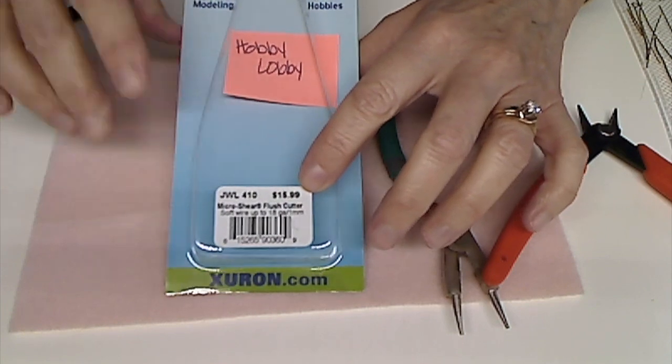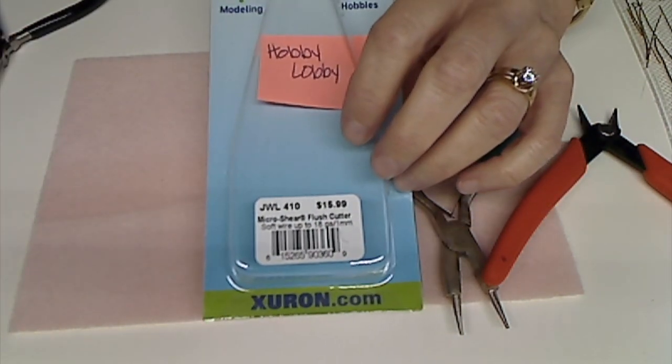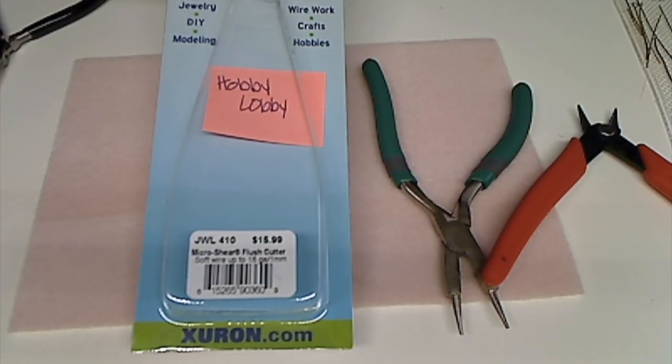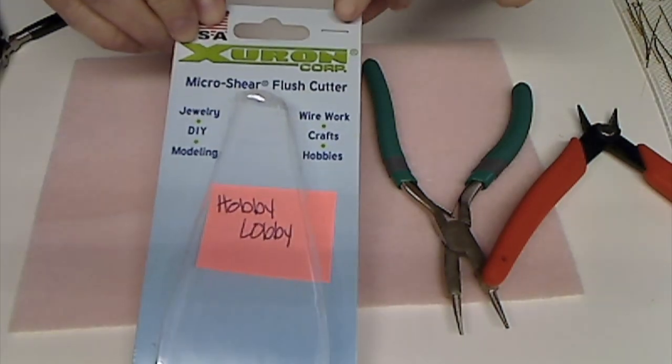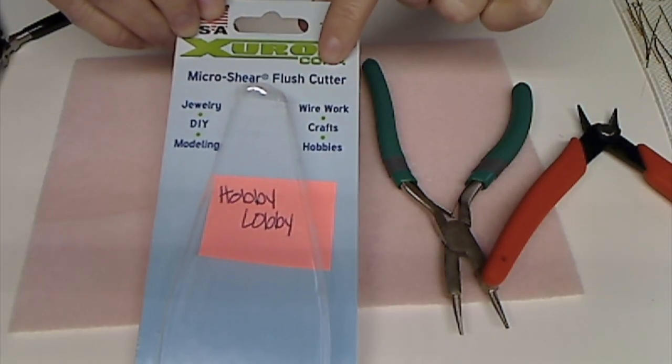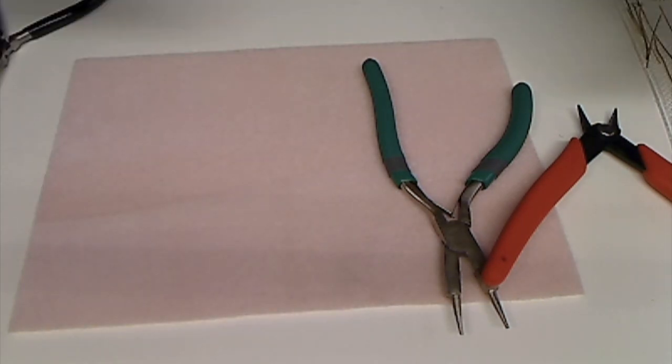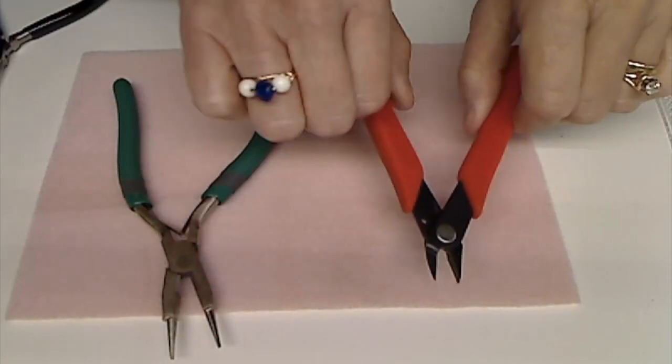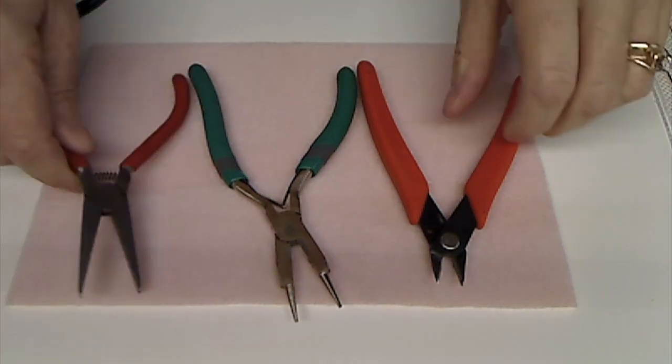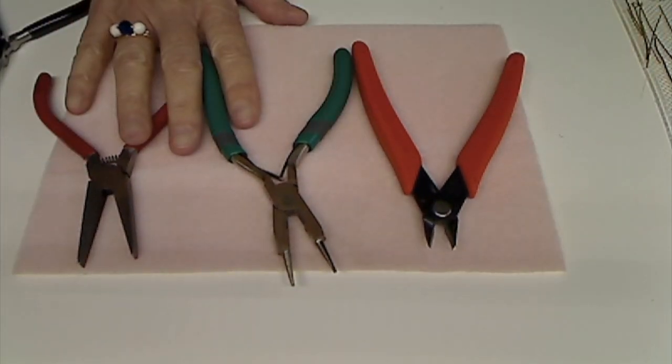And you can get digital coupons. So you don't have to run around with little pieces of paper. And I would highly recommend doing that. And then these cutters are not as expensive. And on the package, it will say flush cutter. And that's what you're looking for. So those are your three basic tools that you need.